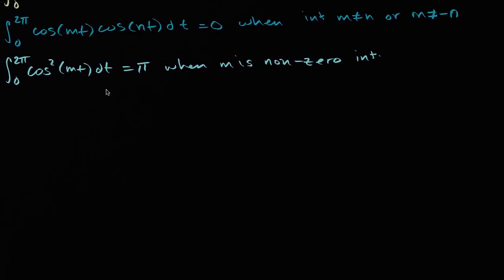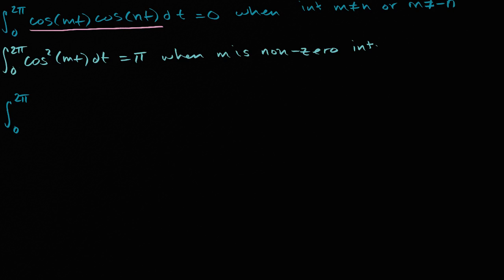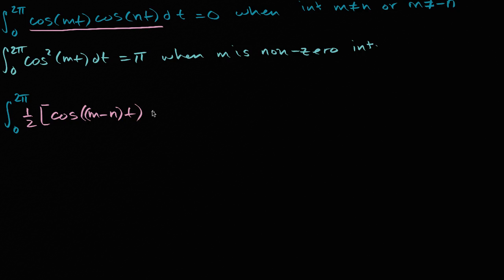We're going to do it the same way we did it with the sines, using some trigonometric identities. So let's rewrite what we're trying to take the integral of. This is going to be the integral from zero to two pi of cosine(mt) times cosine(nt). Using a product-to-sum trig identity — you can review it on Khan Academy — that is going to be one-half times cosine of (m minus n)t, plus cosine of (m plus n)t, dt.